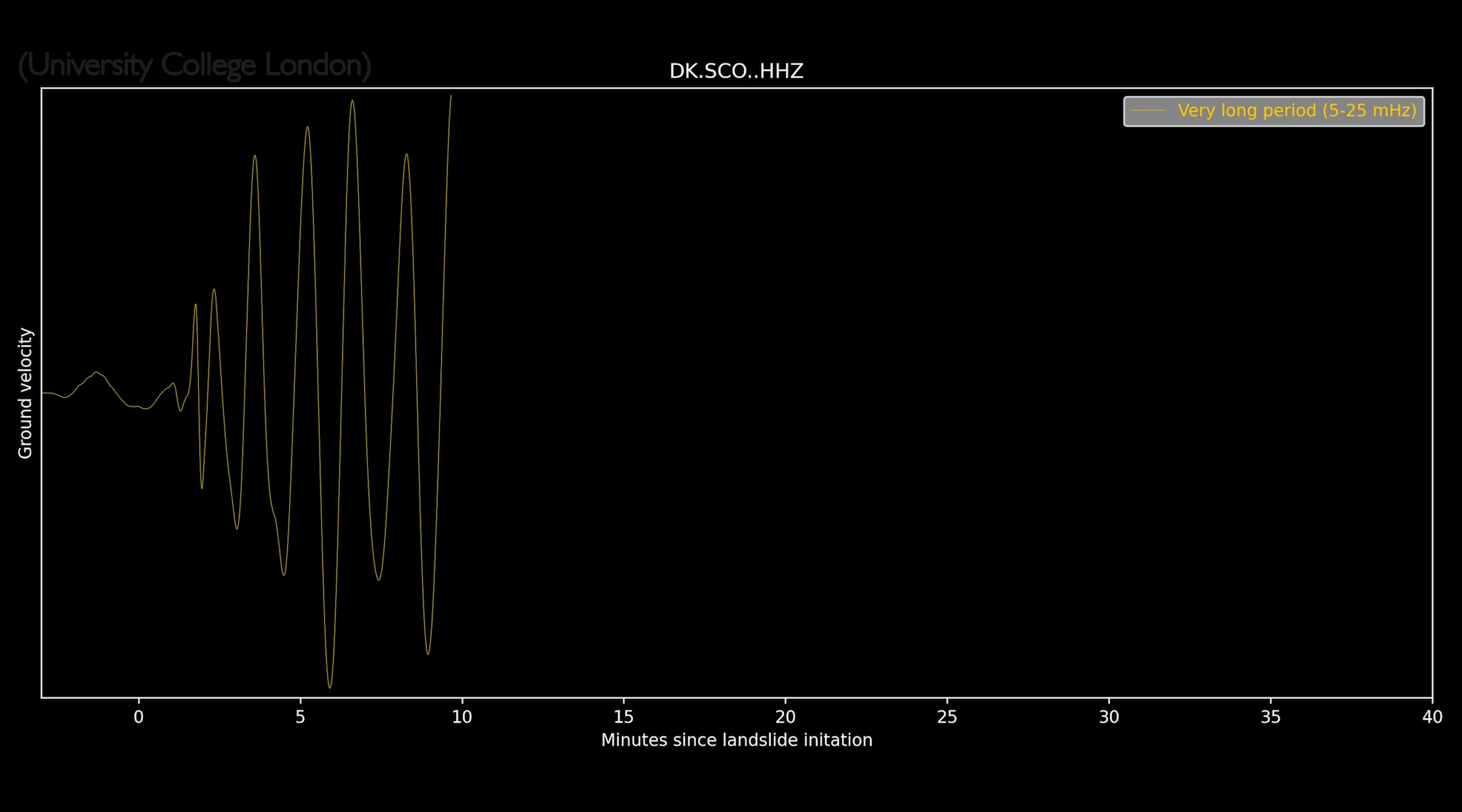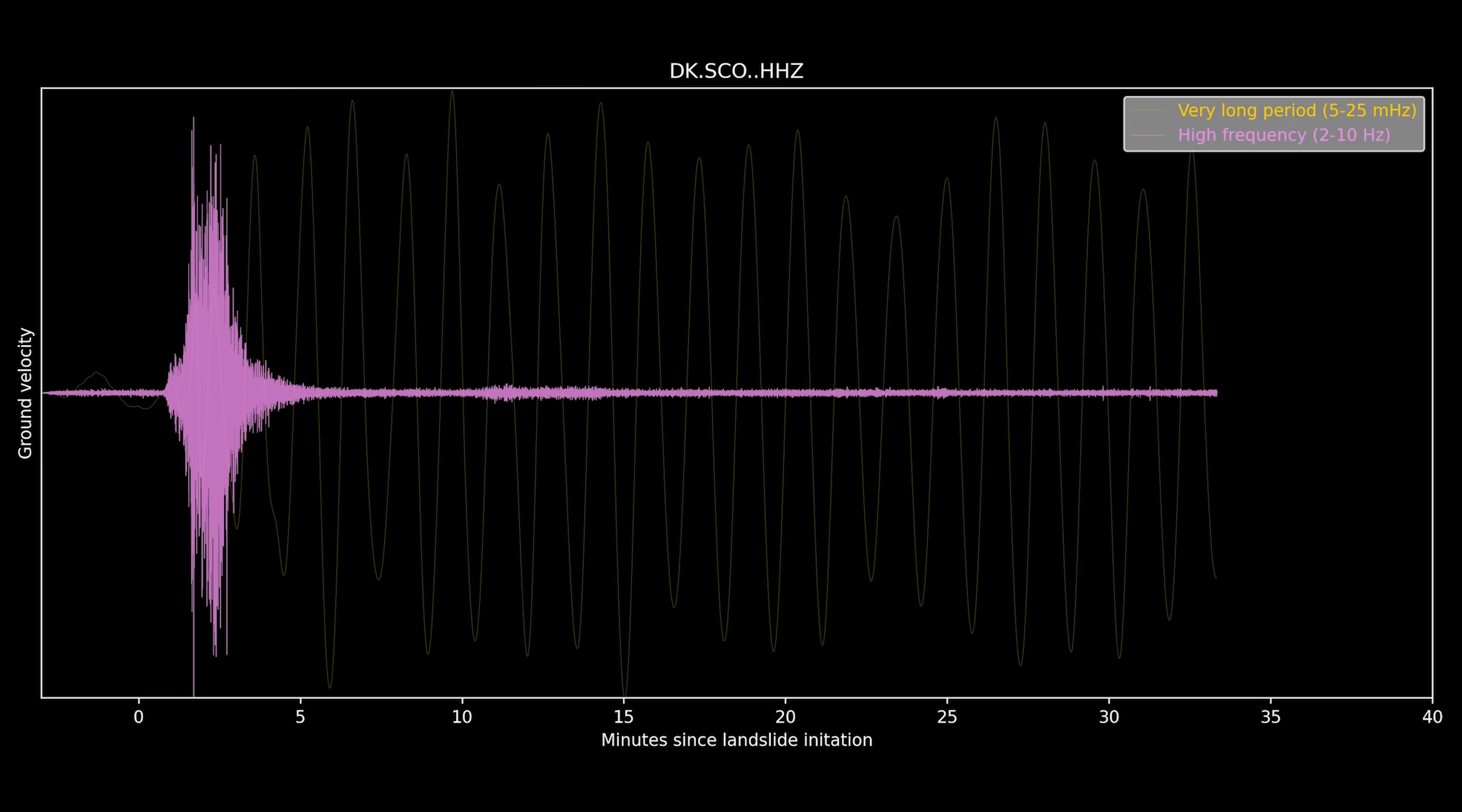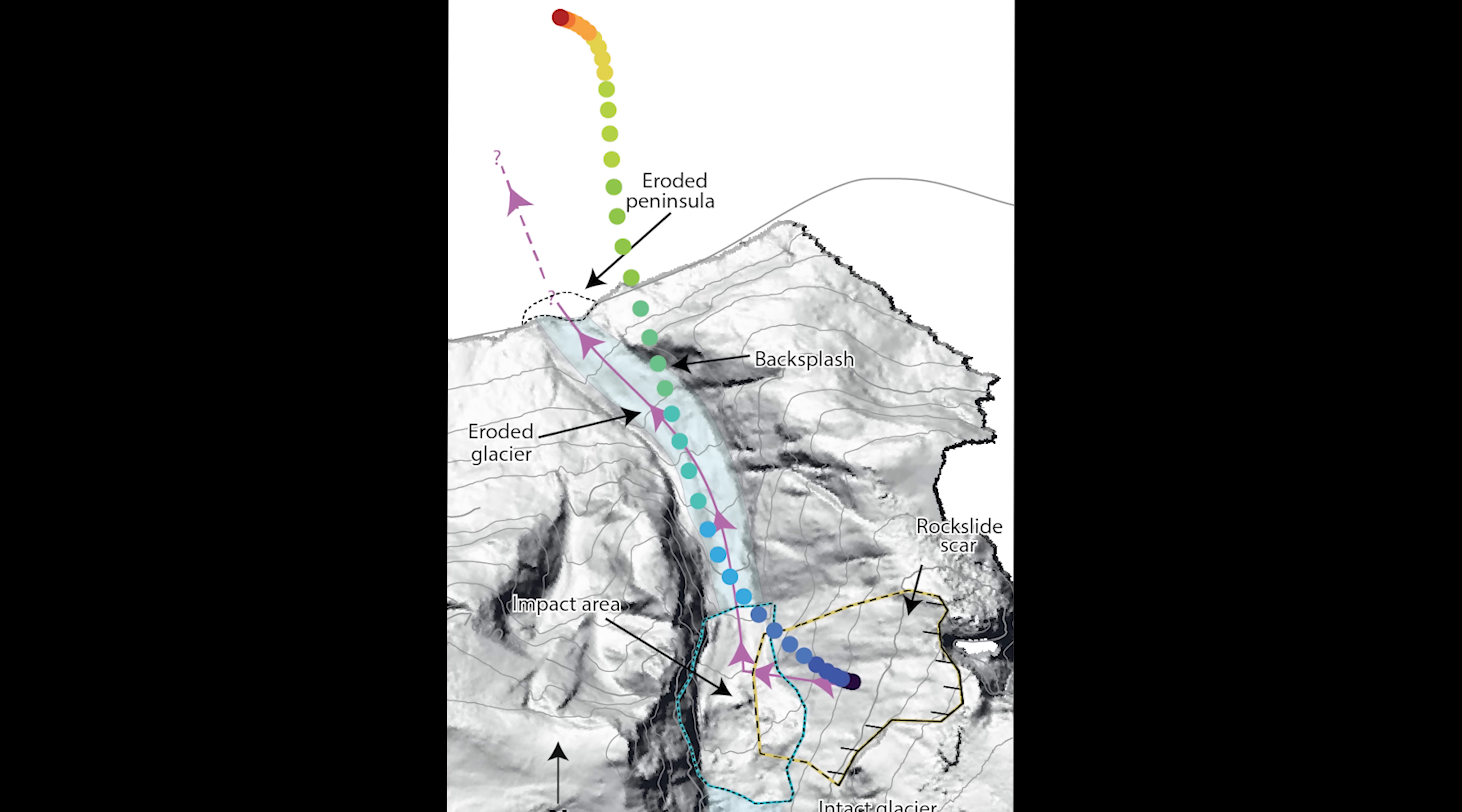Now, it wasn't just this monotonous 90 second period signal that our seismometers recorded. If we filter our data to higher frequencies, we can see a sort of rougher looking higher pitched signal at the onset of the event that lasted only a few minutes. It turns out that this signal comes from the landslide itself. Detailed analysis of this higher frequency signal allows us to track the exact path of the landslide from the mountain down the glacier and into the fjord, confirming the satellite observations.